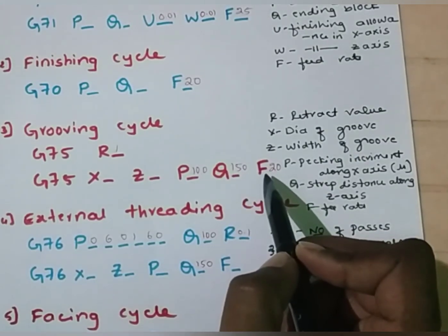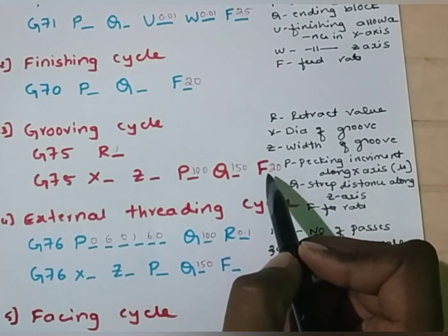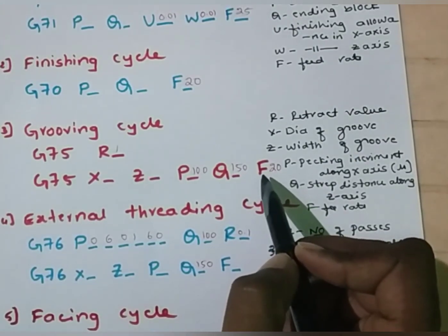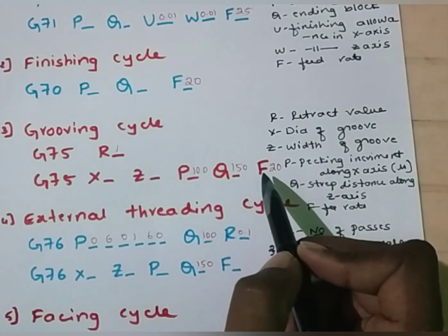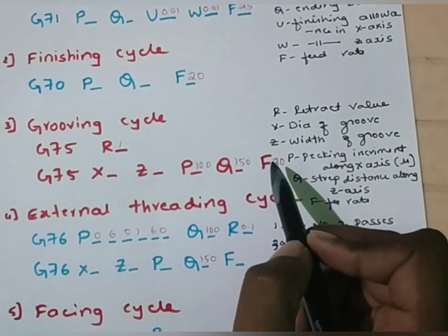F is again feed rate — I am going to assume it as 20 mm. You can assume a different feed rate if you want.